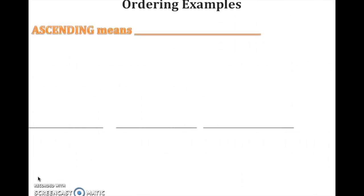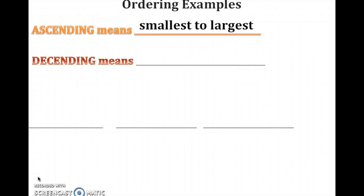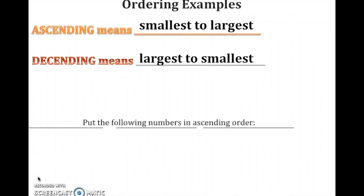Before more examples, let's put some vocabulary in context. Ascending means smallest to largest — think of going up, starting from the bottom to the top. Descending means largest to smallest — you start from the top and go down to the bottom.